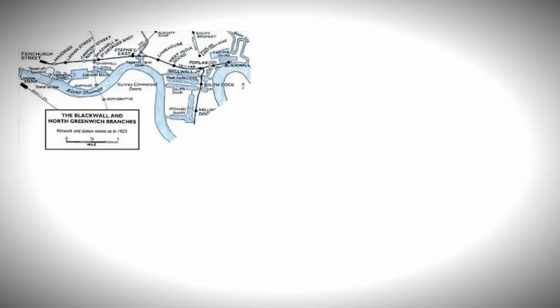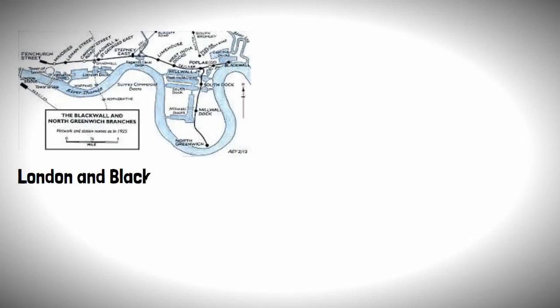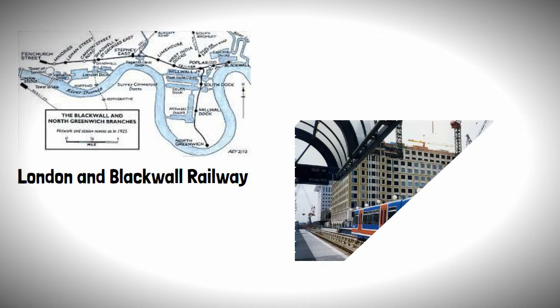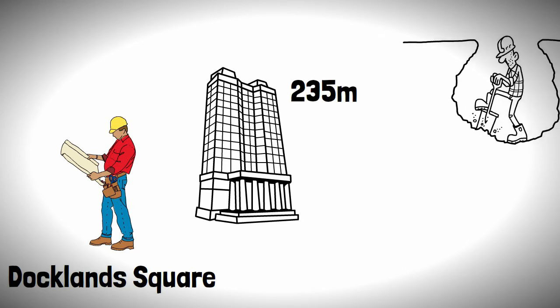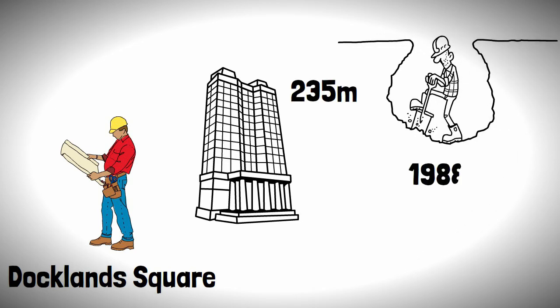The new development would take advantage of the old London and Blackwall Railway to provide a connection with the newly opened Docklands Light Railway. Initial proposals focused development on what was to be known as Docklands Square, with the Pinnacle being a 235-meter tall tower. Construction on the new development began in 1988.